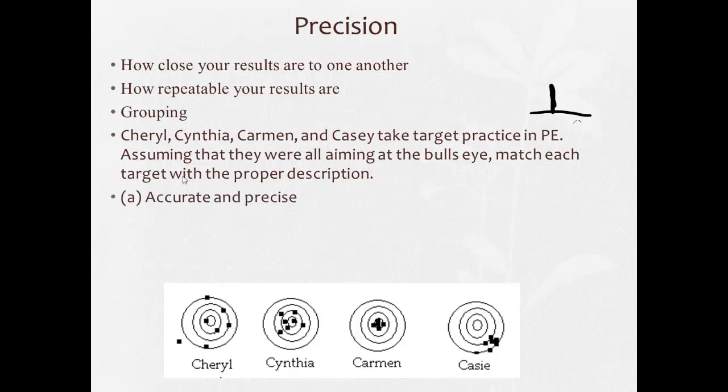Accurate and precise. So we're looking for close to the bullseye and all clumped together. So here, they're all at the bullseye, all clumped together. So Carmen would be A.